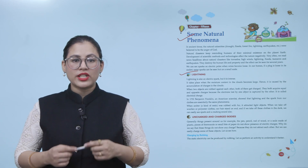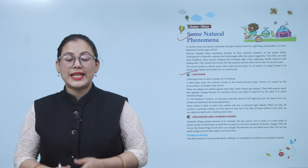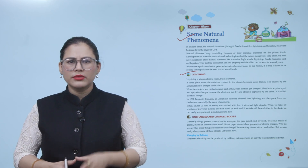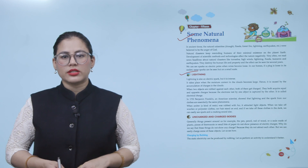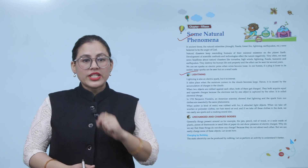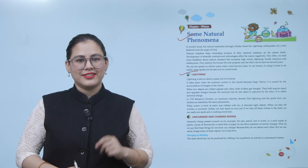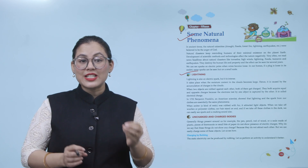In 1752, Benjamin Franklin, an American scientist, showed that lightning and the spark from our clothes are essentially the same phenomenon. When amber, a kind of resin, was rubbed with fur, it attracted light objects. When we take off woolen or polyester clothes, our hair stands on end, and if we take off these clothes in the dark, we can easily see a spark and hear a cracking sound.